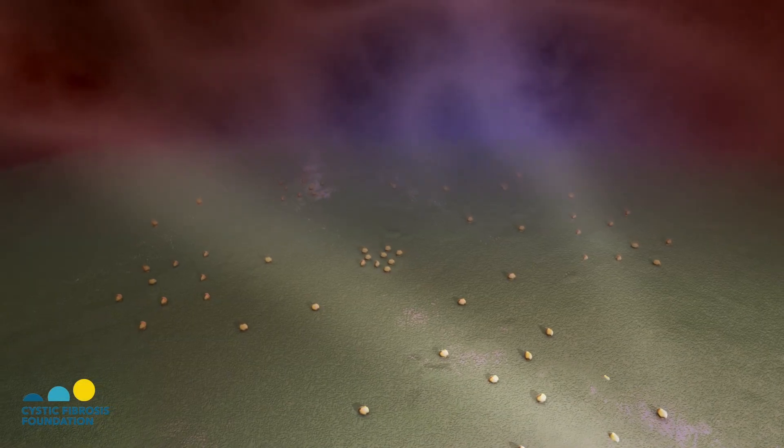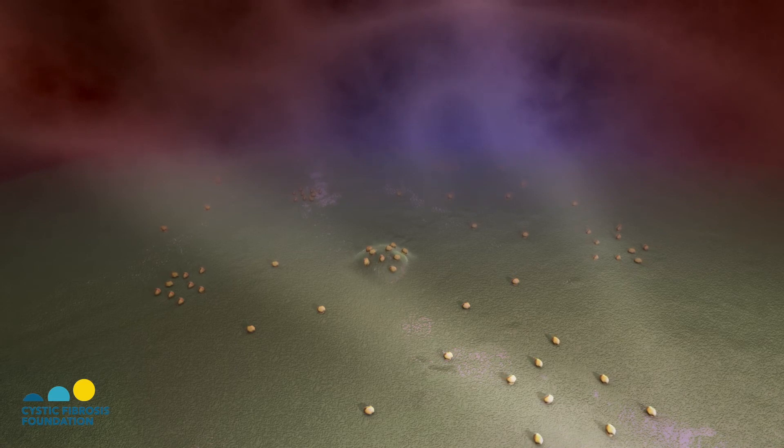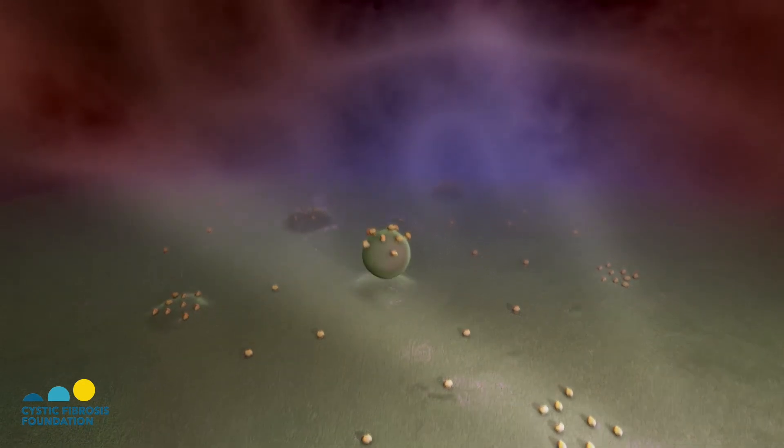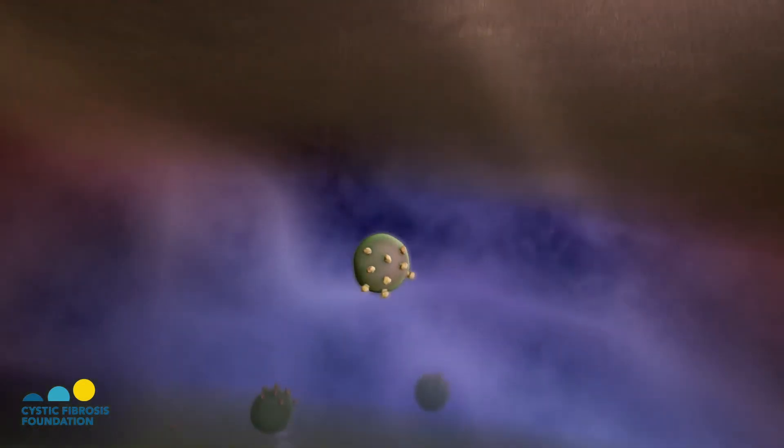Now the corrected CFTR protein is being formed, then moved through the cell and up to the cell surface, where it can function as a chloride channel.